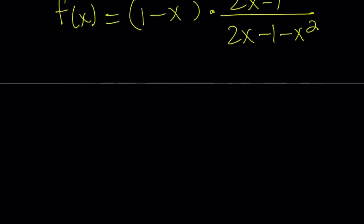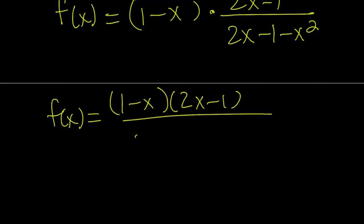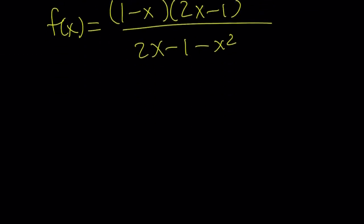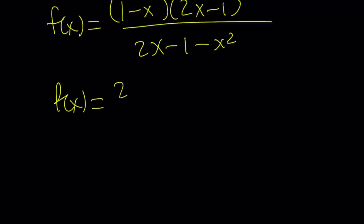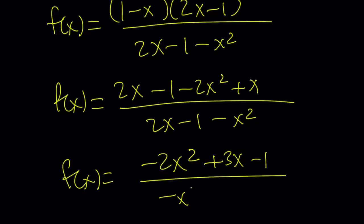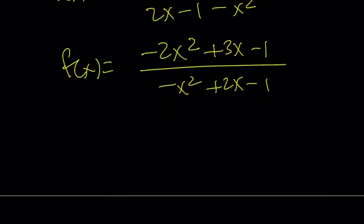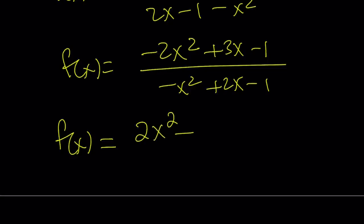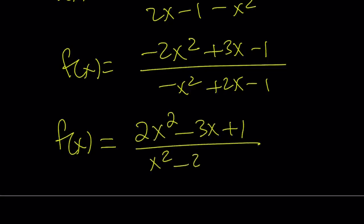We can put this in a slightly nicer way by multiplying 1 minus x times 2x minus 1 in the numerator, distributing to get 2x minus 1 minus 2x squared plus x, over 2x minus 1 minus x squared. Rearranging: negative 2x squared plus 3x minus 1 over negative x squared plus 2x minus 1. Negating top and bottom gives 2x squared minus 3x plus 1 over x squared minus 2x plus 1, which can also be written as x minus 1 quantity squared.